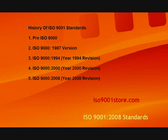In 1987, the British government persuaded the International Organization for Standardization, ISO, to adopt BS5750 as an international standard. The international standard was named ISO 9000.